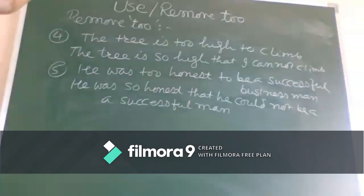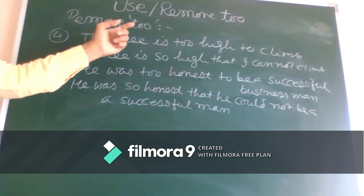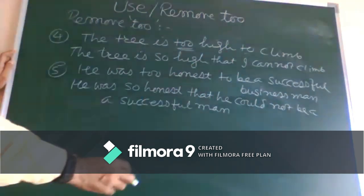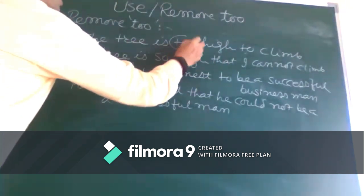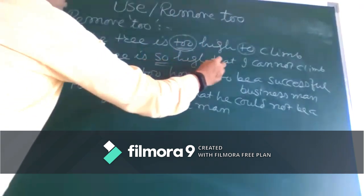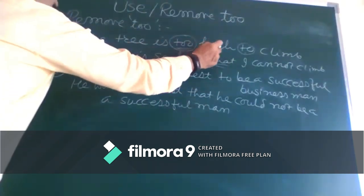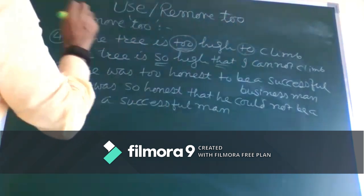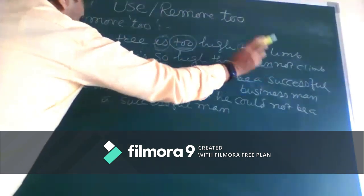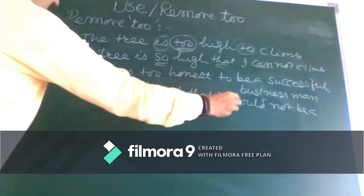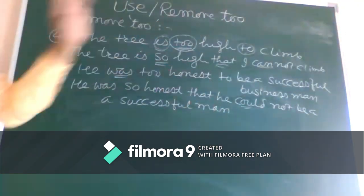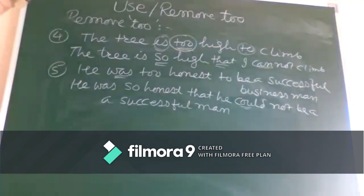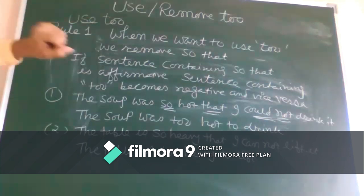Two more examples: 'The tree is too high to climb.' We remove 'too' and apply 'so that': 'The tree is so high that I cannot climb.' Rule number one — remove adverb 'too' and apply 'so that.' Rule number two — if the original sentence is positive (not in negation), the 'so that' sentence becomes negative. If present tense, use 'cannot'; if past tense, use 'could not.' For example: 'He was so honest that he could not be a successful man.'